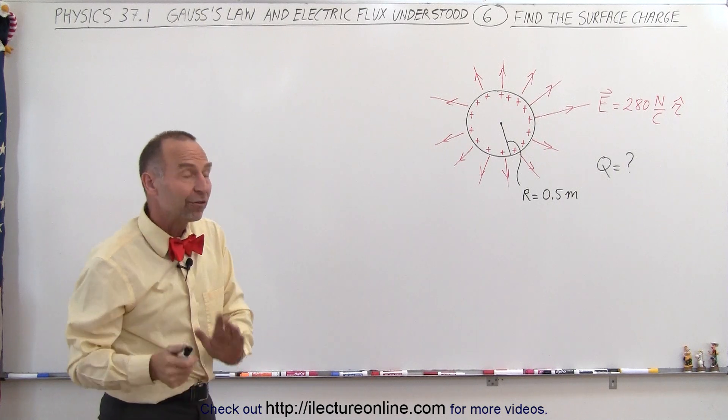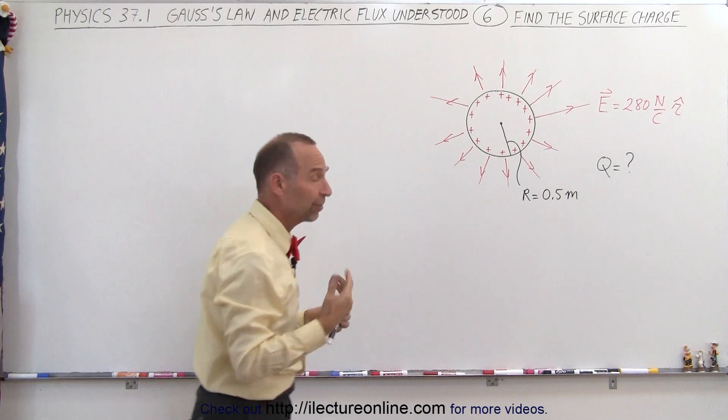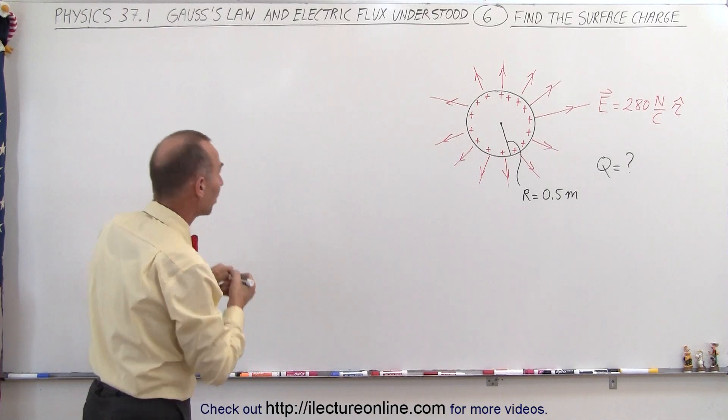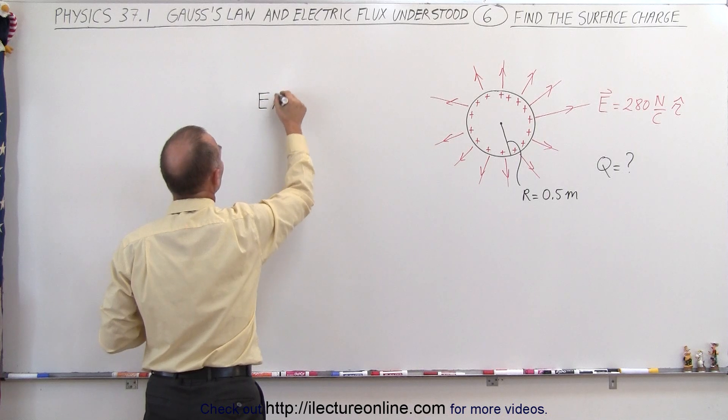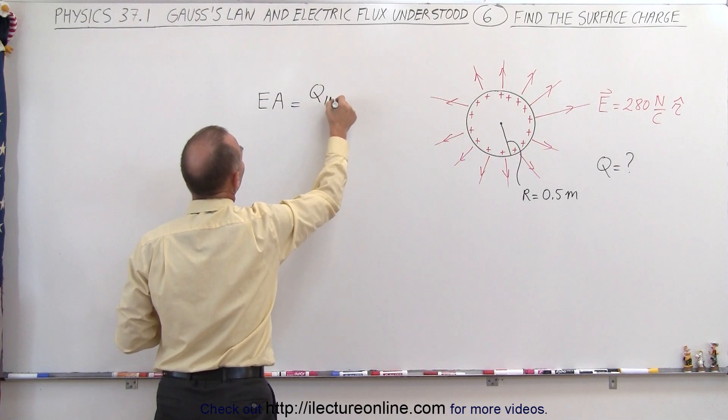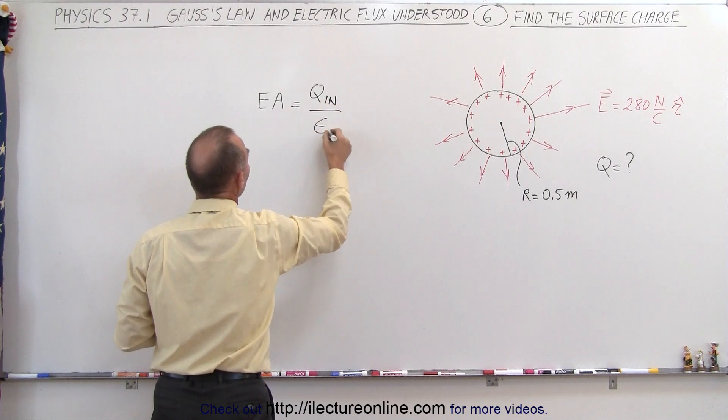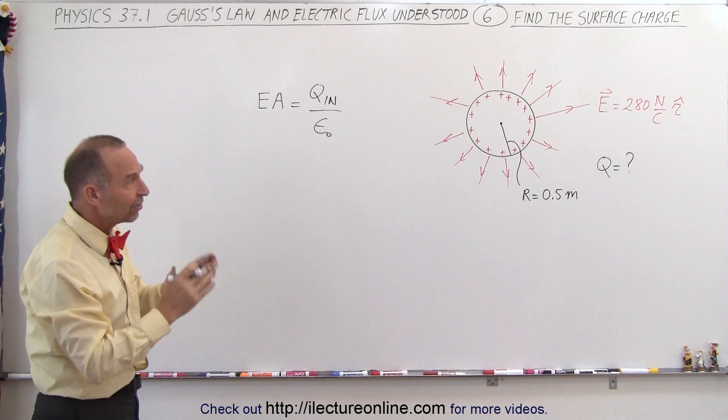What we're trying to do here is find how much charge is on that conductor. For that, we're going to use Gauss's law, which tells us that the electric field strength times the surface area of the Gaussian surface is equal to Q inside divided by epsilon nought. Of course, we're looking for Q inside. But how do we set up the problem?